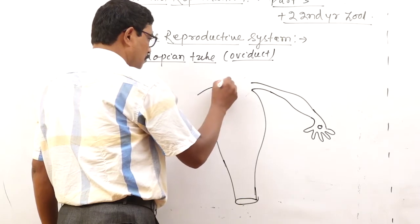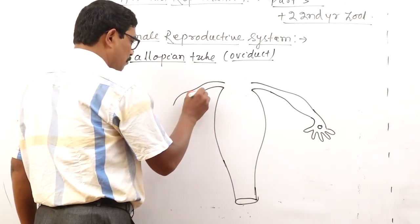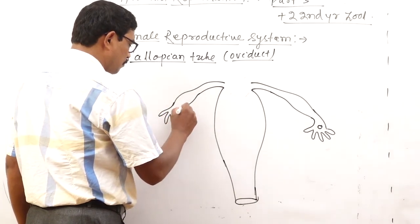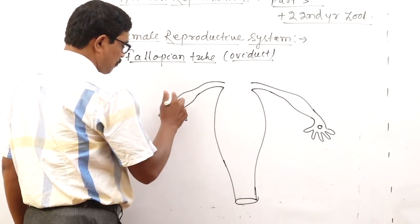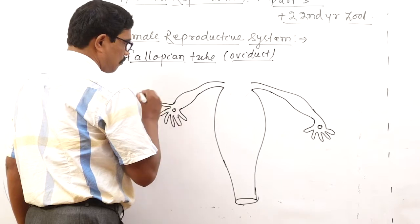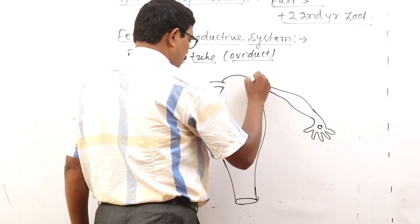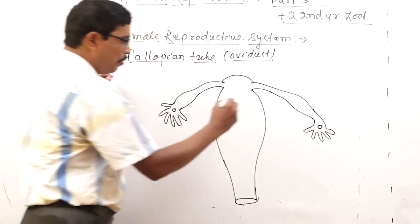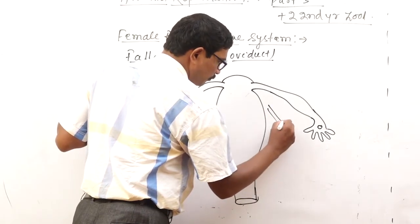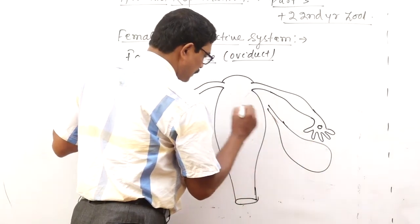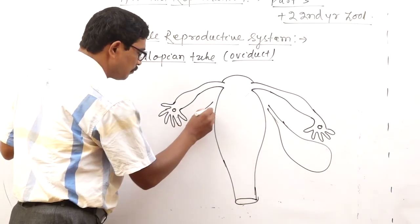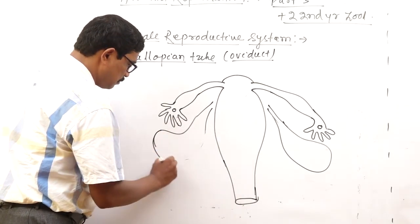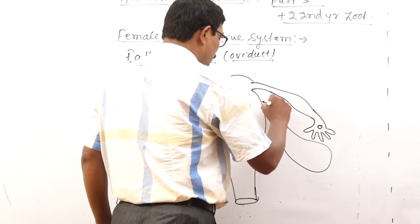The fallopian tube is very close to the ovary. This structure is called the ovary.